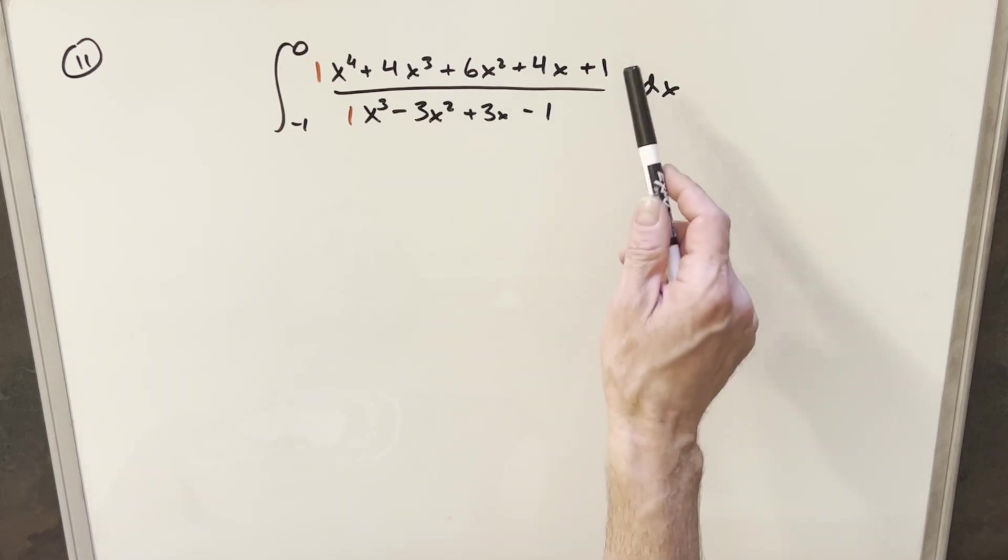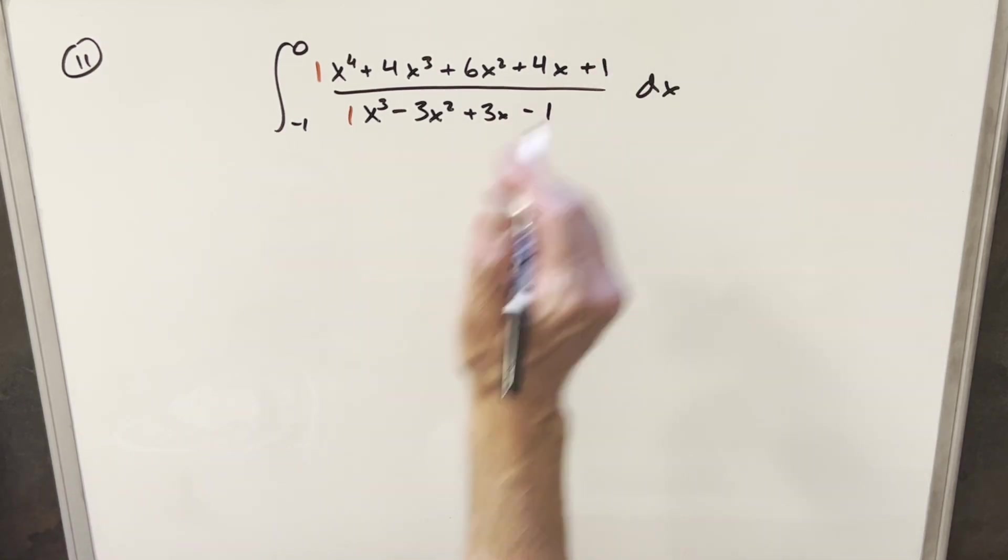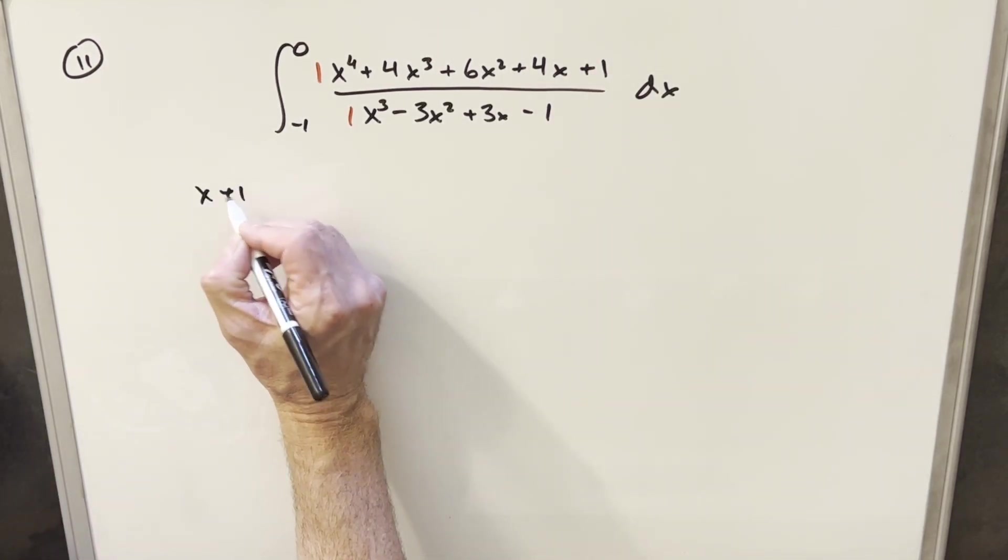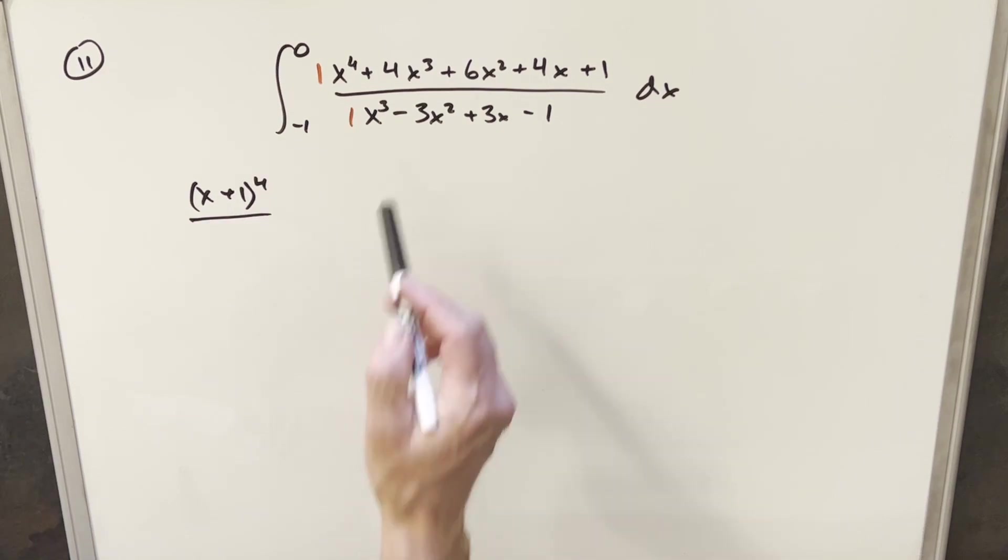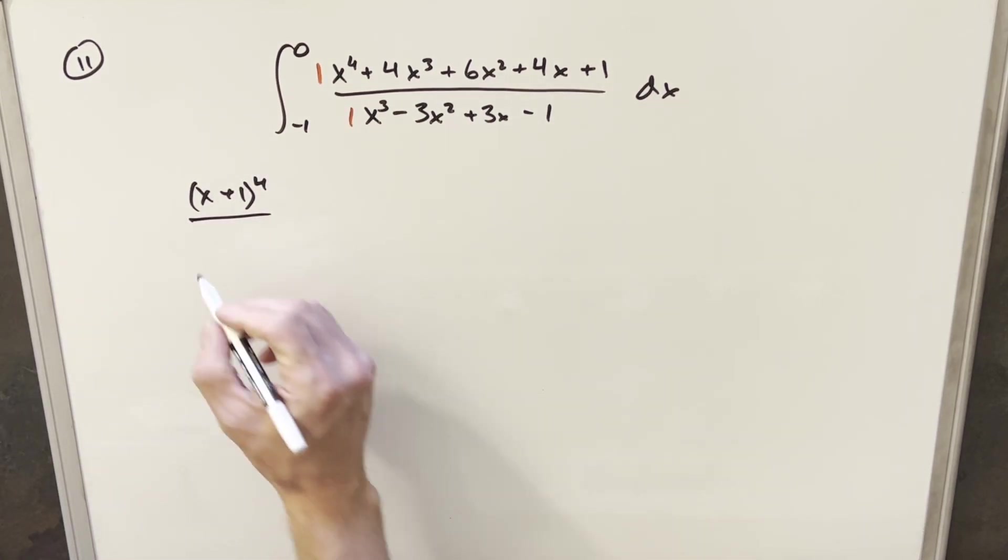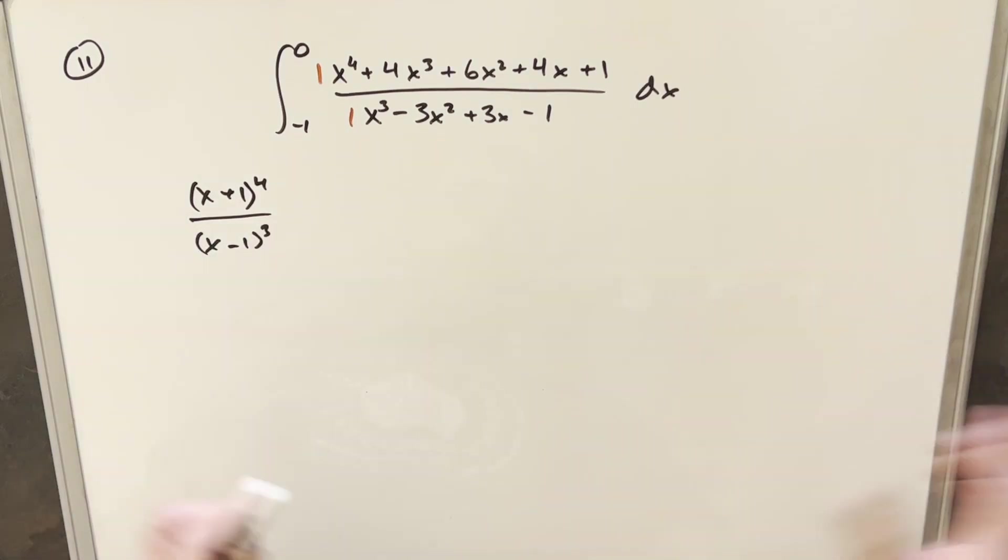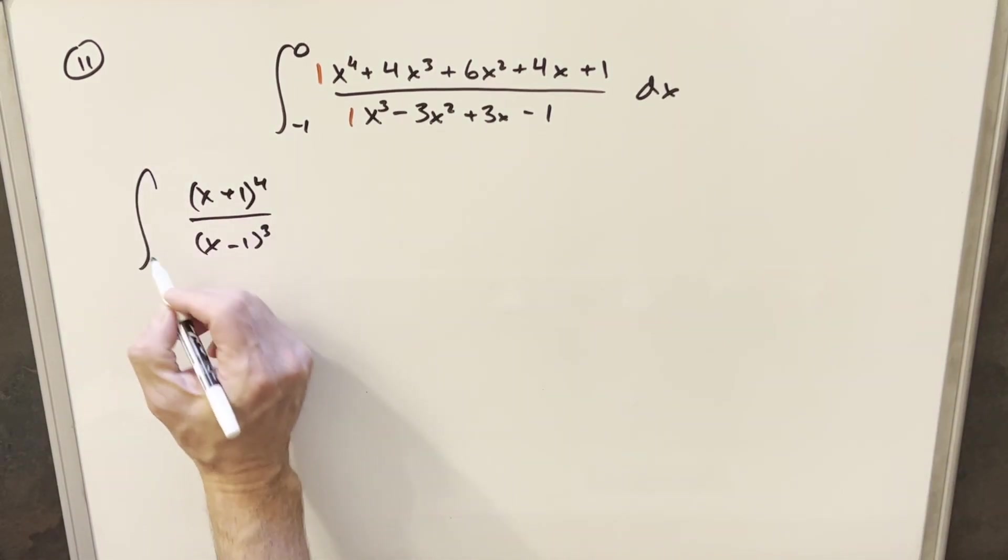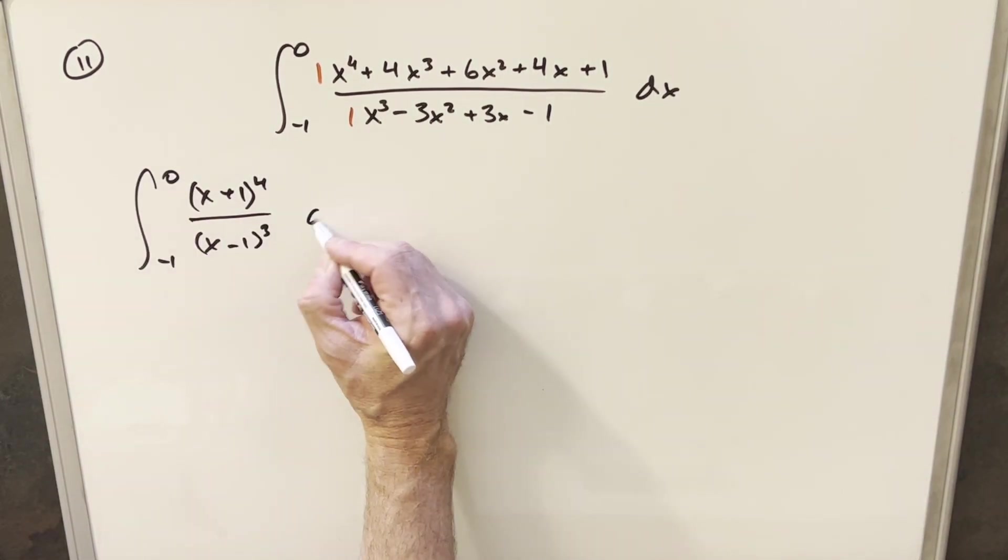And what that tells me is that the numerator and denominator, both just the expansion of a single term. So like for the numerator, for example, I can actually just write this as (x+1) to the 4th. And because of the minus signs here, the denominator is not going to be (x+1) cubed, it's actually going to be (x-1) cubed. So we can just rewrite the integral this way, we'll put in the bounds, and we can continue.